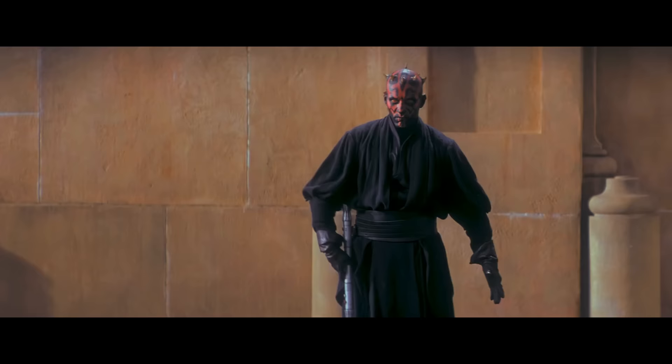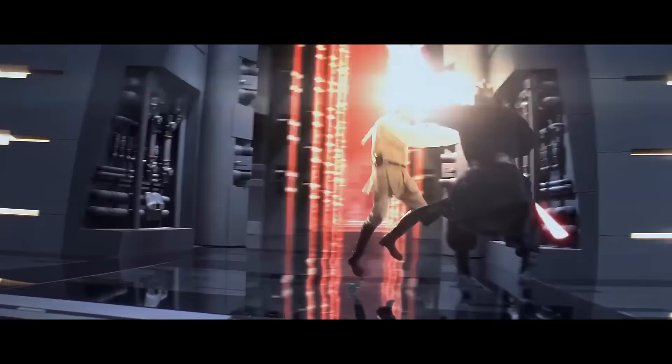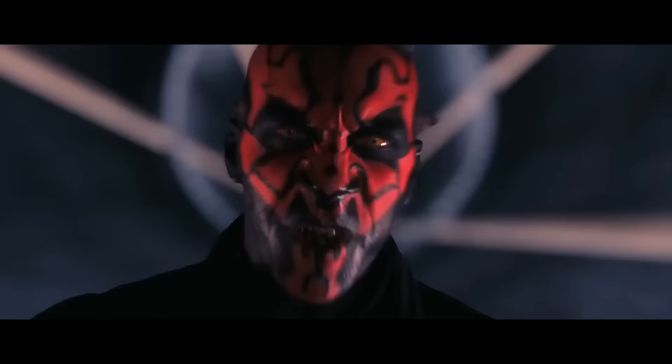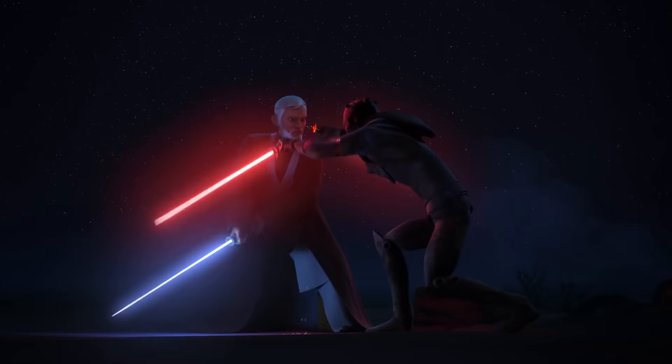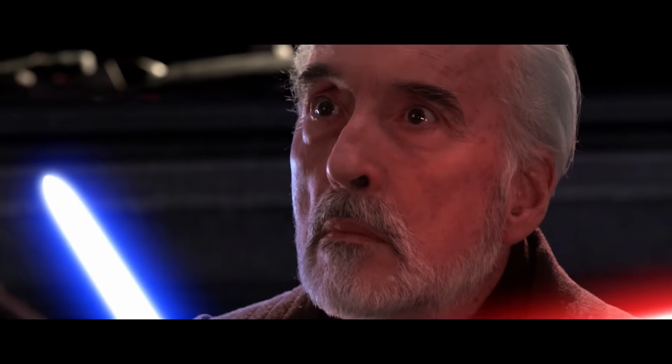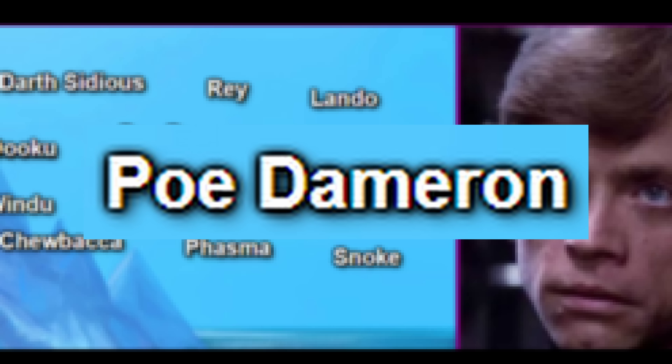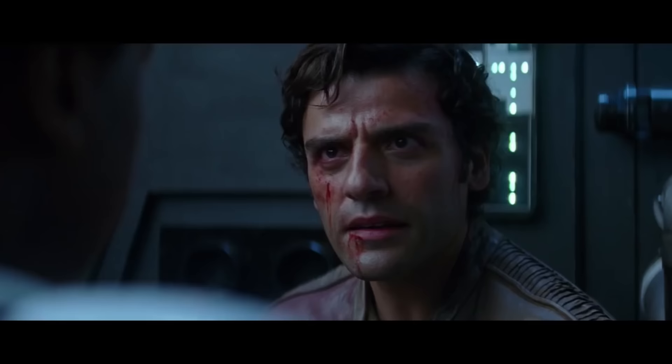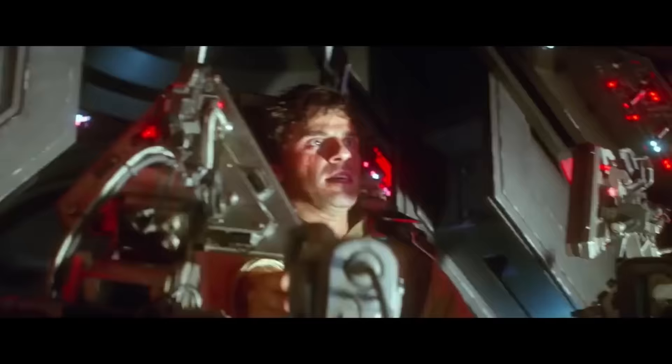Darth Maul was a Dathomirian Sith Lord who served under Palpatine. During a fight with Obi-Wan, he lost his legs and stopped being Palpatine's apprentice. He would end up dying in another fight with Obi-Wan decades later. Count Dooku, or Darth Tyranus, was a Sith Lord and politician during the Republic era. He served under Palpatine and ended up being killed by Anakin near the end of the Clone Wars. Poe Dameron is a New Republic and eventual Resistance pilot who was active for pretty much the entire events of the sequel trilogy.